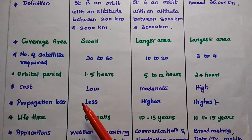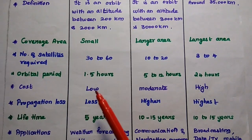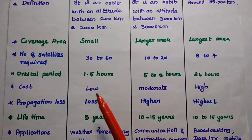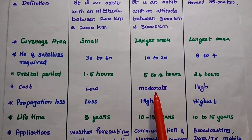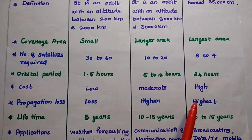The cost for launching satellites to LEO is low. For MEO, it is a moderate cost. For GEO, it is a very high cost to launch the satellites into geostationary orbit.